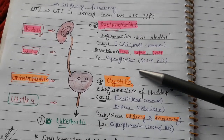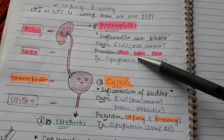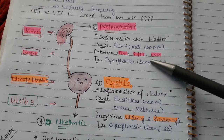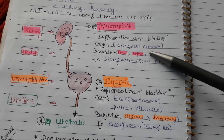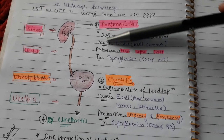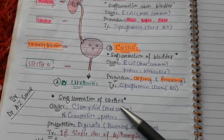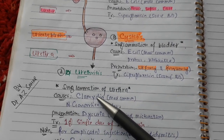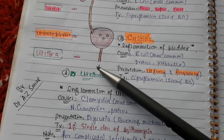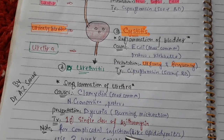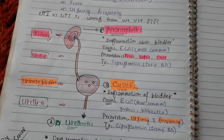Cystitis is related to the urinary bladder, which is why we see urgency and frequency. Pyelonephritis is related to the kidney, so the patient presents with fever, sepsis, and casts. Whenever we see casts, it means there is a problem with the kidney. Urethritis is actually most common in females because of the short urethra.